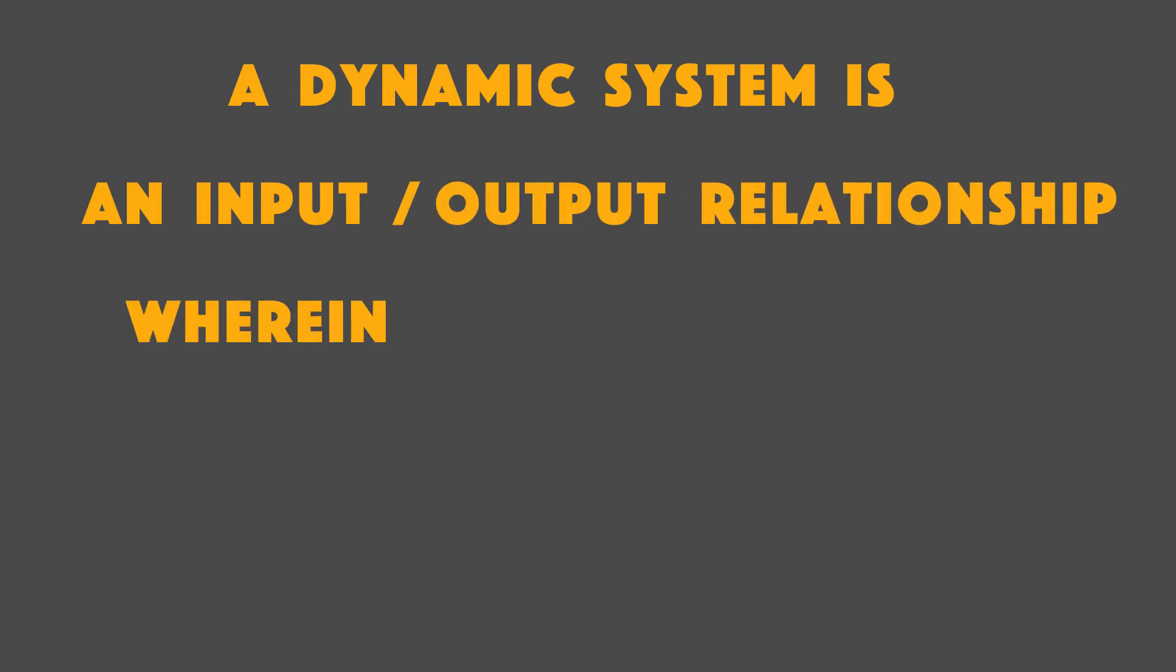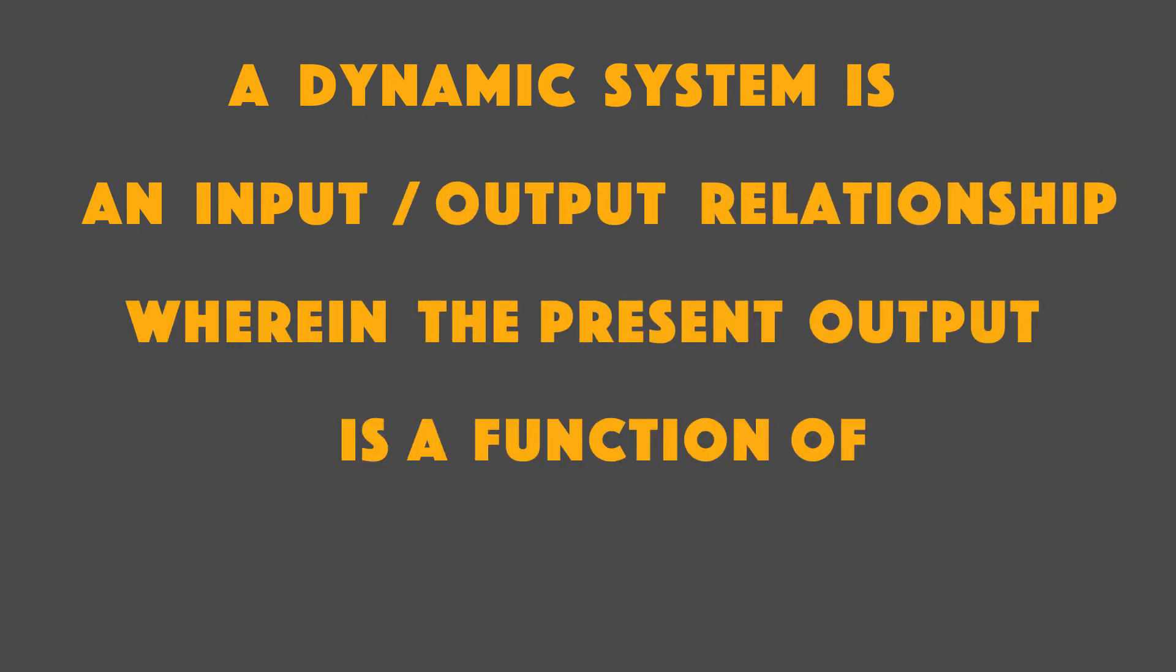Because dynamic systems come in all sorts of different forms, we need a broad definition of what it means to be a dynamic system. At its most fundamental level, a dynamic system is an input-output relationship, wherein the present output is a function of both present and past inputs.